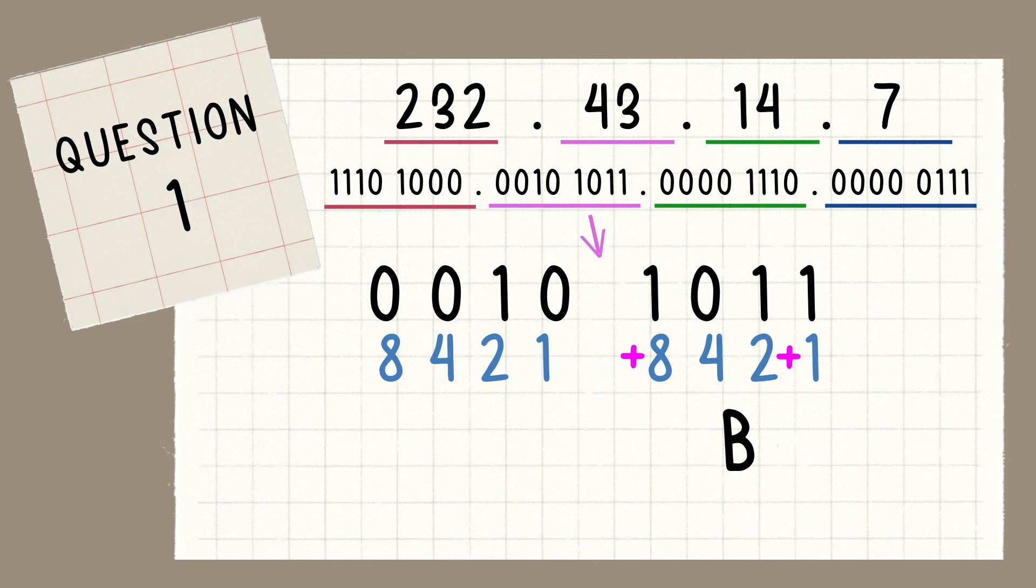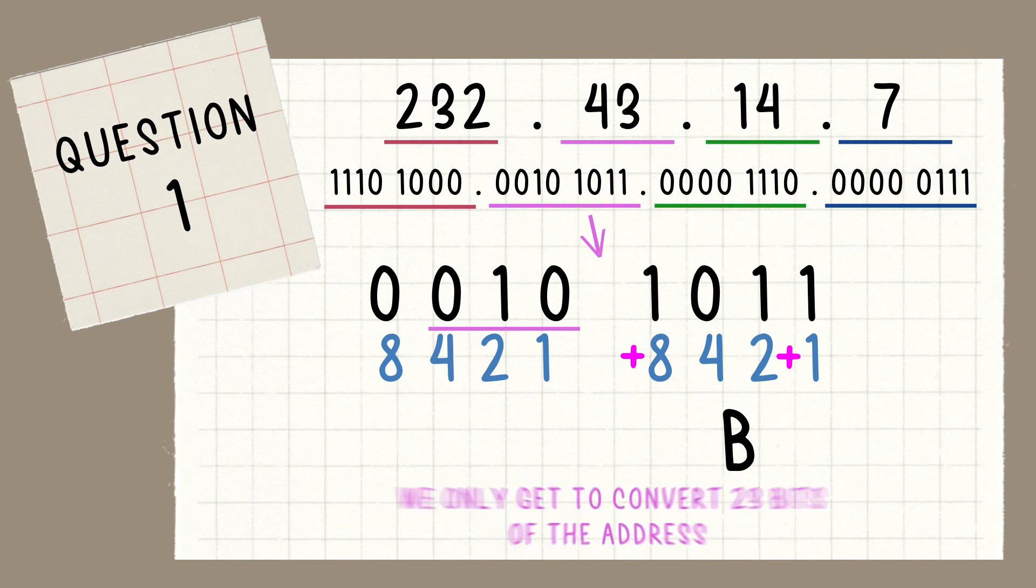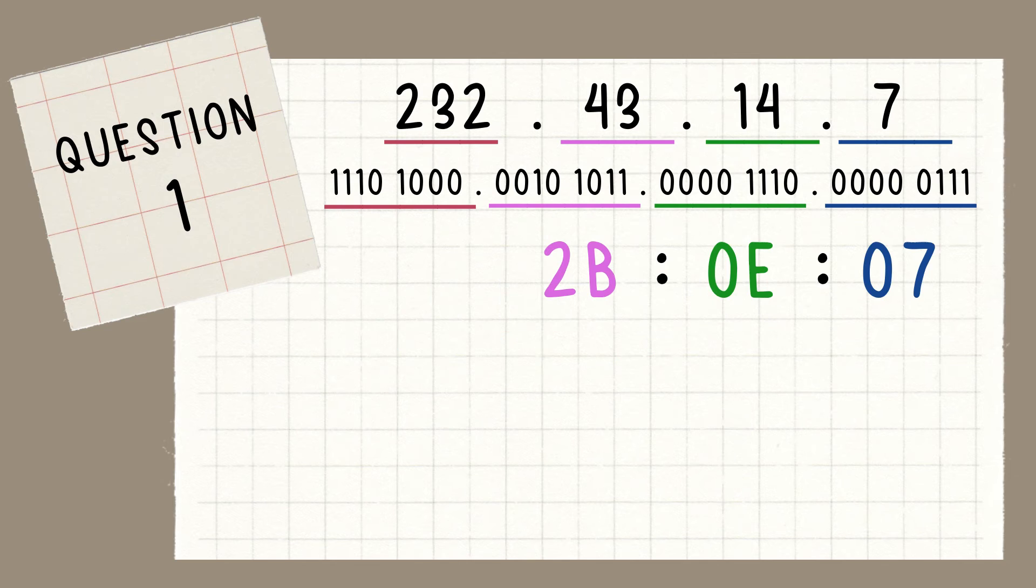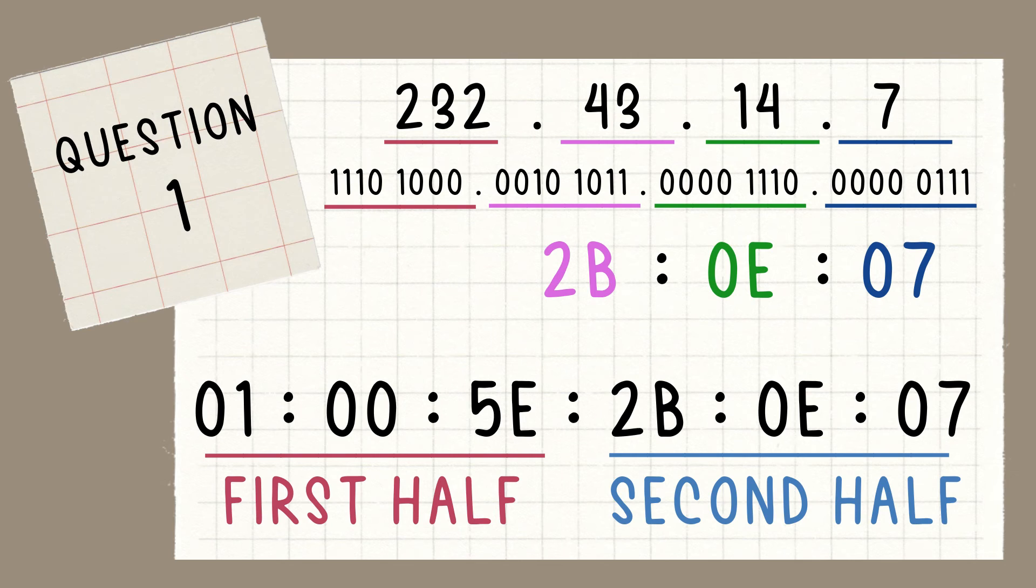So, next, for the last group, we just take 3 digits because 23 bits. Then, 2 only as one and the hex value is 2. So, the final answer is 01-00-5E-0B-0E-07. First half of multicast will always be 01-00-5E. The second half of the multicast comes from the last 23 bits of multicast IP address.